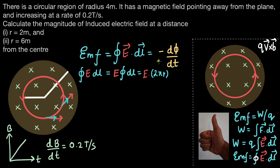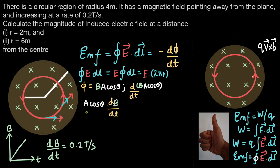Now let's think about how the flux is changing. Flux is given by Φ = BA cos θ, and the rate of change of flux is dΦ/dt = d/dt(BA cos θ). Since A and cos θ are not changing, this becomes A cos θ × dB/dt. To determine cos θ, we view the loop from an angle. Using the right-hand curl rule for an anti-clockwise loop, the area vector points upward while the magnetic field points down, so the angle between them is 180 degrees and cos(180°) = -1.